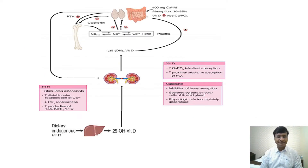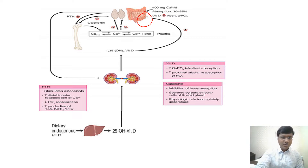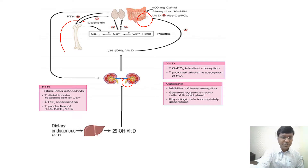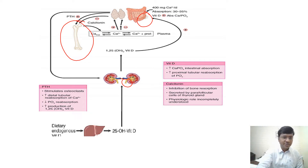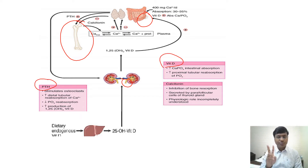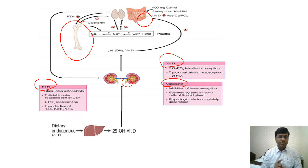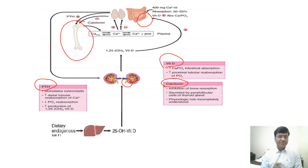Regarding calcium regulation: calcium is absorbed from the intestines with the help of vitamin D, and it is also reabsorbed from the kidney. Once calcium enters the circulation, 98% is distributed within the bone. Two important hormones increase serum calcium levels: parathormone and vitamin D. Parathormone increases osteoclastic activity causing bone resorption, while vitamin D increases calcium reabsorption at the duodenum. Calcitonin decreases calcium by inhibiting bone resorption. These three hormones regulate calcium at around 9 to 11 mg/dL.